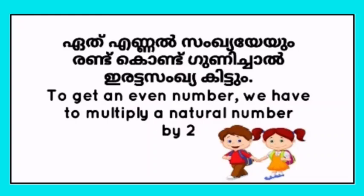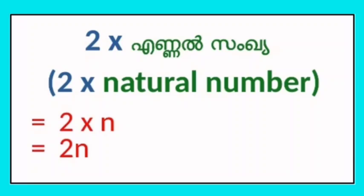Now we have to multiply the natural number by 2. We will multiply each natural number by 2 to get the even numbers.